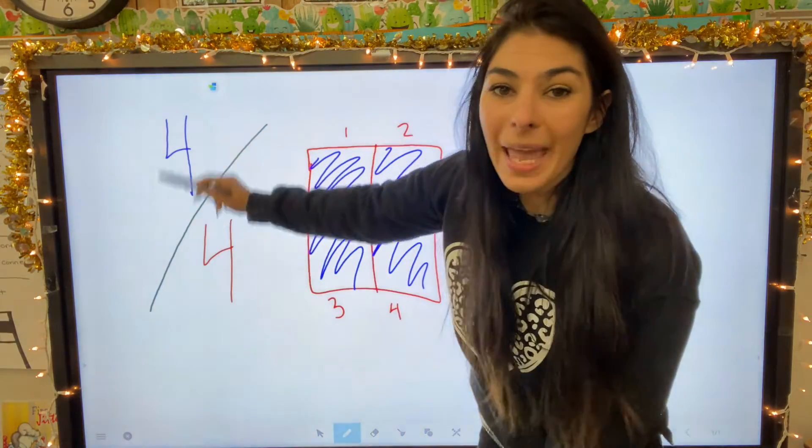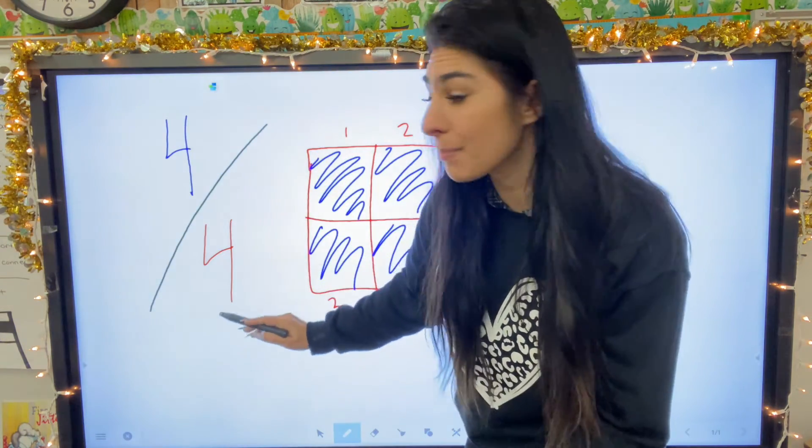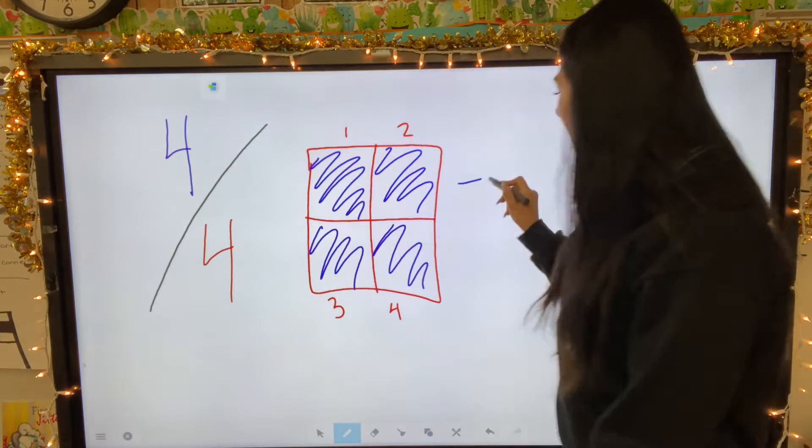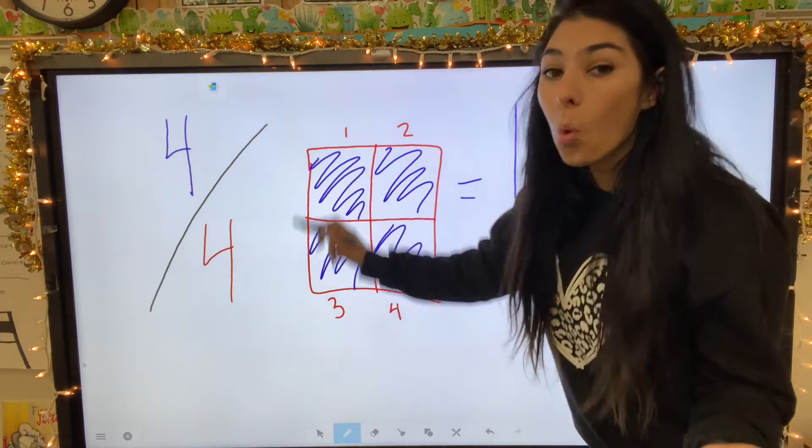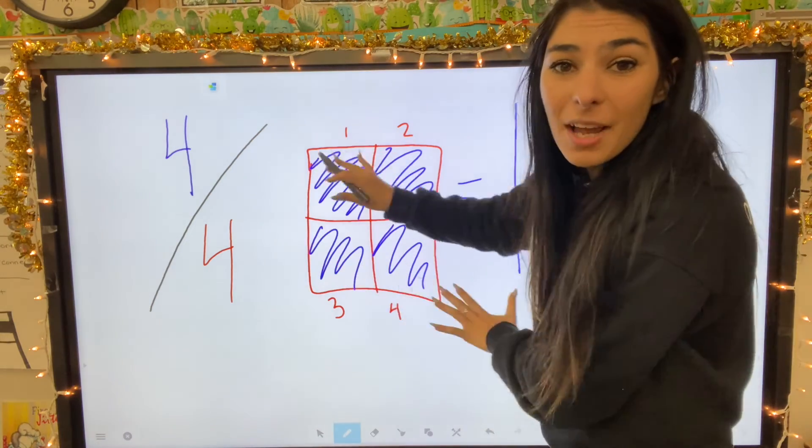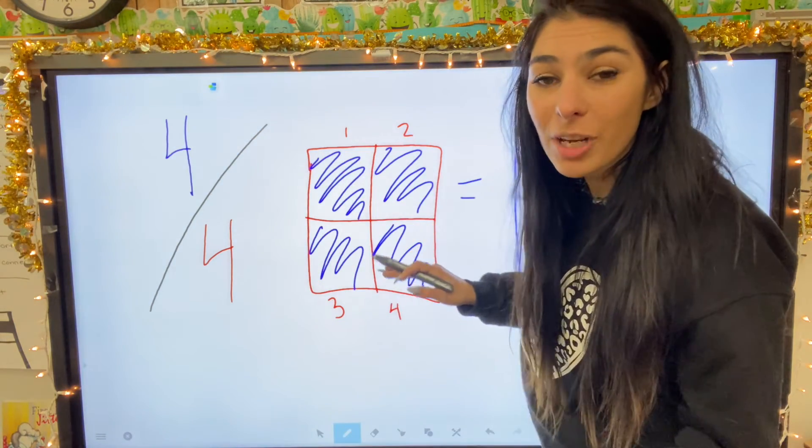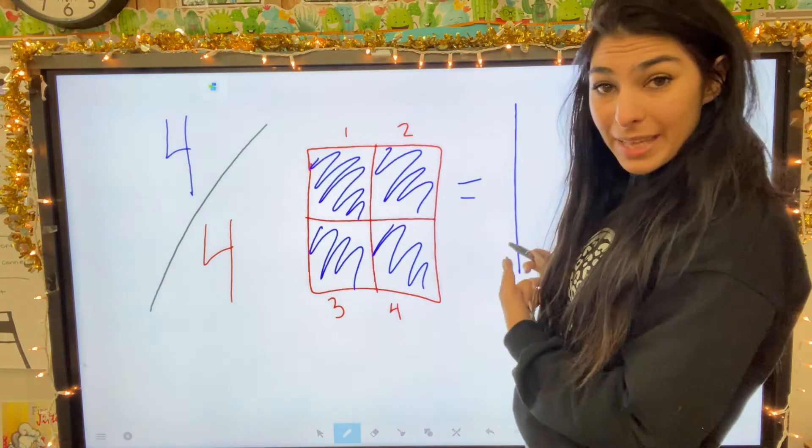When the top and bottom number, the numerator and denominator are the same, that actually equals one because that is one whole. There is no piece of this square that is not shaded. The whole square is shaded. So the answer is one.